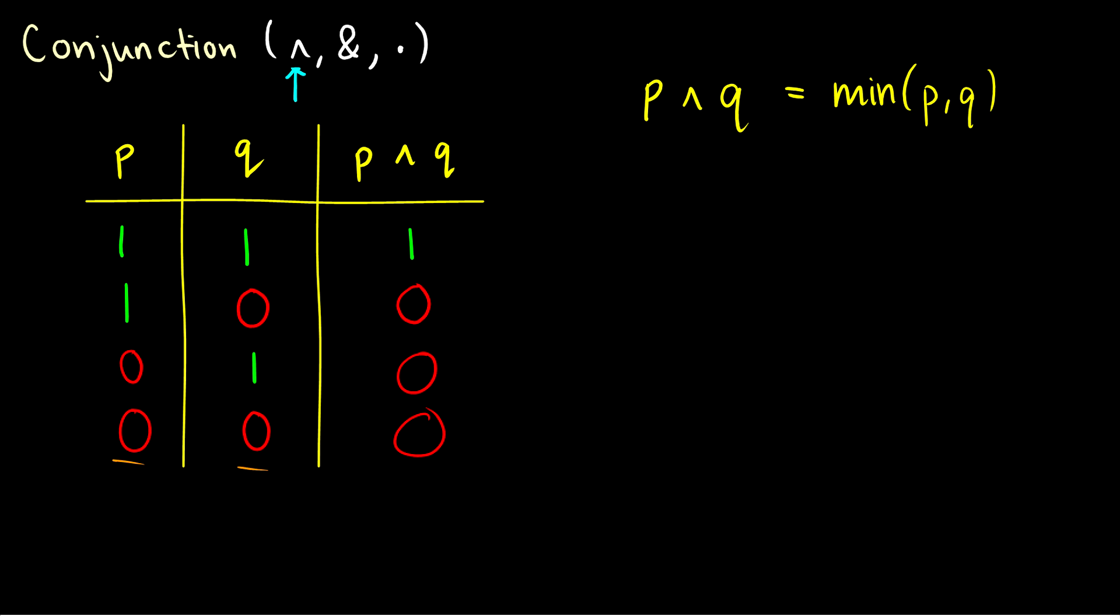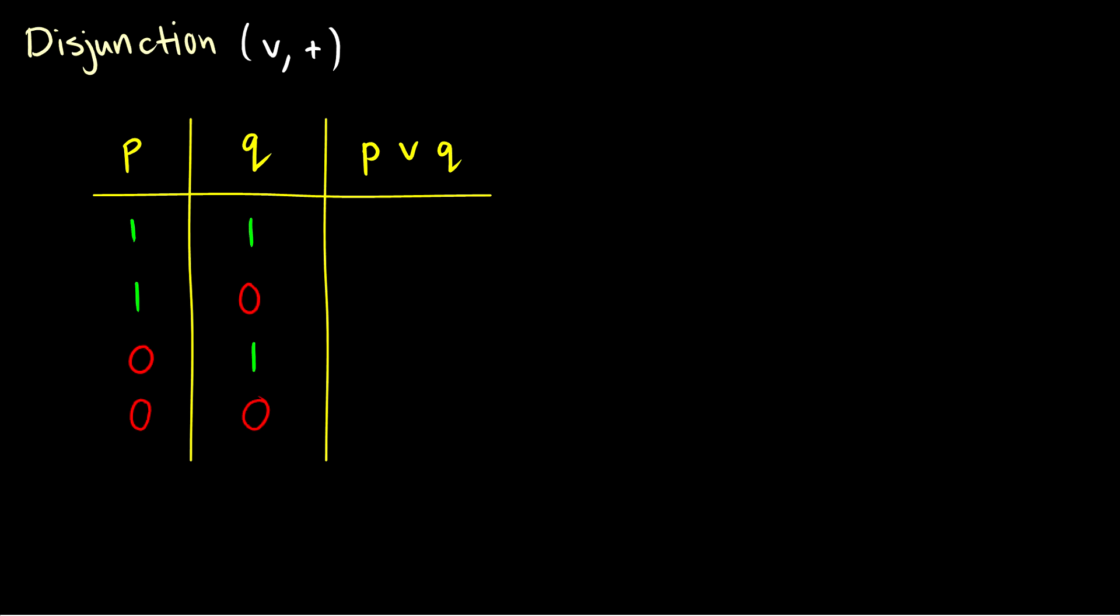So that's conjunction, and of course conjunction is AND. Let's take a look now at disjunction. And disjunction, you'll either see the V or you'll see a plus sign. The plus sign more in abstract boolean algebras.